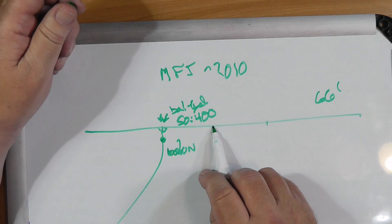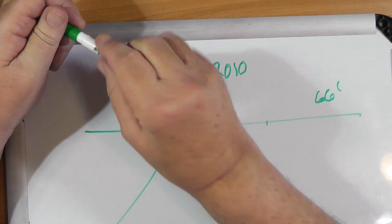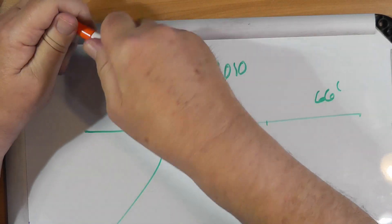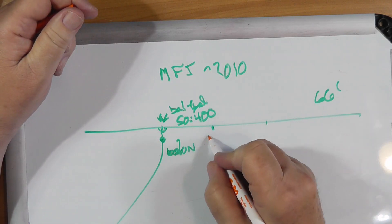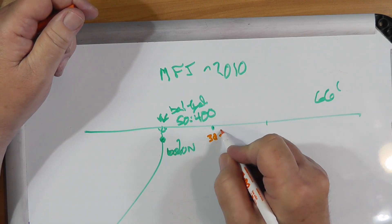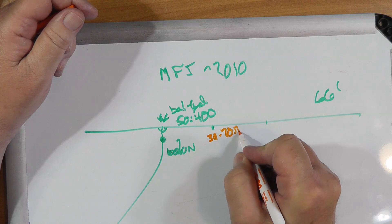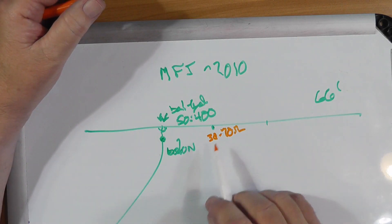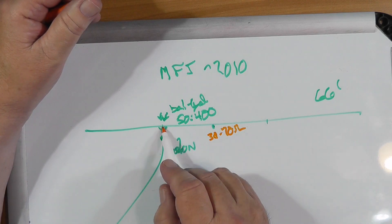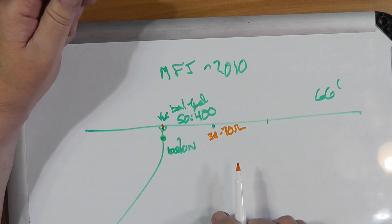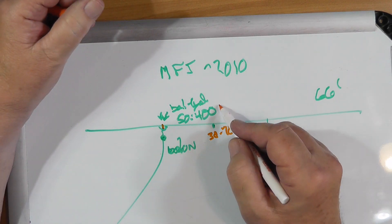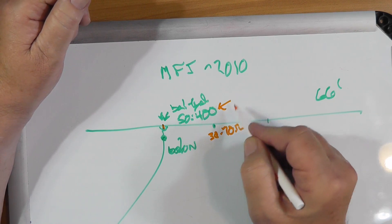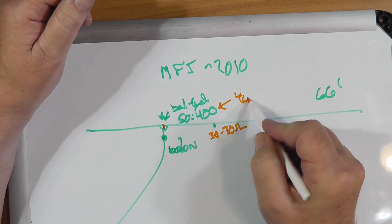And then there is, I guess, what you would call a balun to balance, and it converts from 50 ohms to 400 ohms. So it's a four-to-one balun that sits right here. Now, the center point of this, if you were to feed at the center point, would be on the order of 30 to 70 ohms, depending on the height of the antenna.